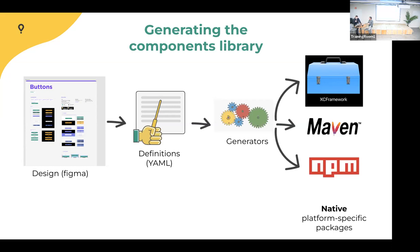Once the YAML is changed, the generator arrow in the diagram is fully automated in CI/CD — the monorepo triggers CI to generate all packages and publish them to internal repositories (like GitHub Package Registry) for iOS, Android, and web. Consumer apps then just update the package — we do this every week or two anyway. If it's not urgent, just wait. If it is urgent, open a PR and bump the version. The whole thing can be done in one day in theory.